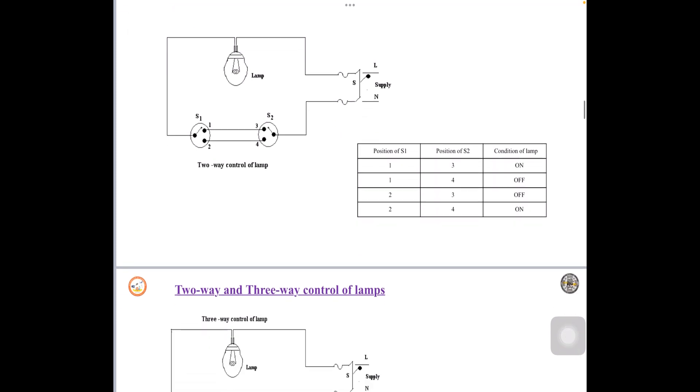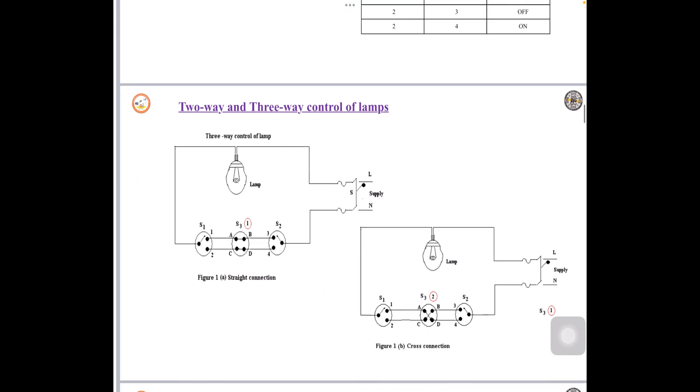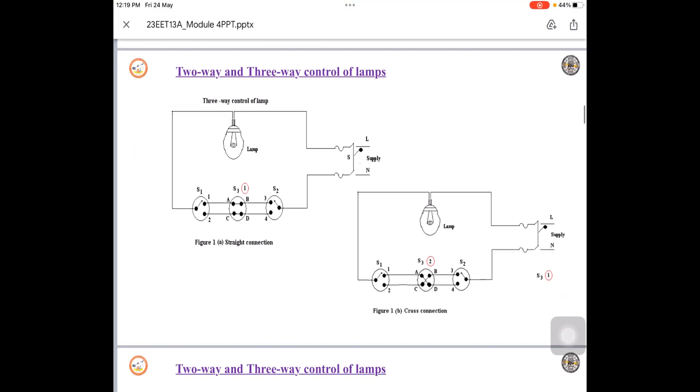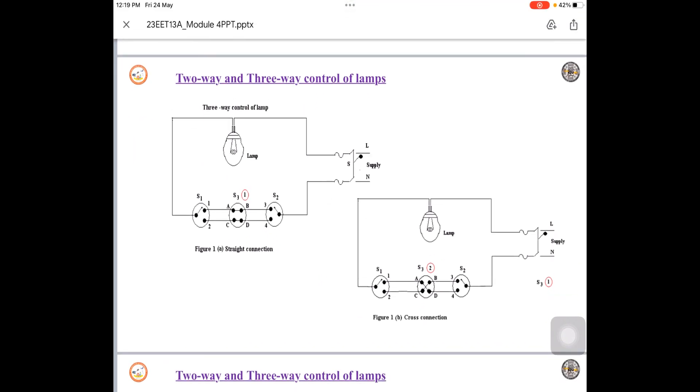Now let us analyze about 3-way control of lamps. What is the change when we observe 2-way and 3-way? In 3-way control of lamp, you can observe here there are three switches.